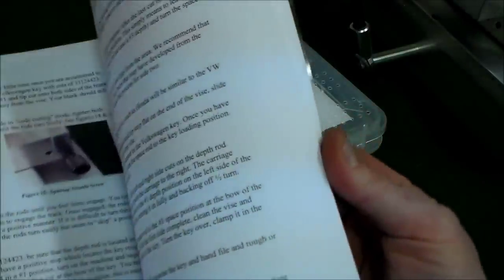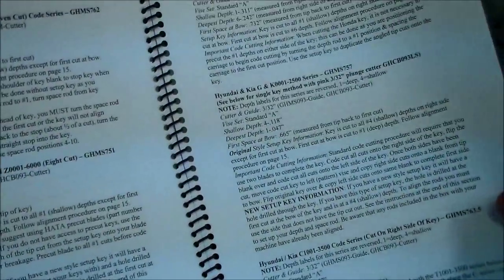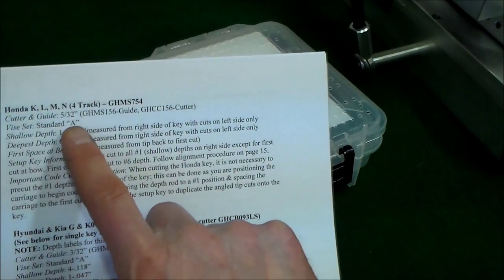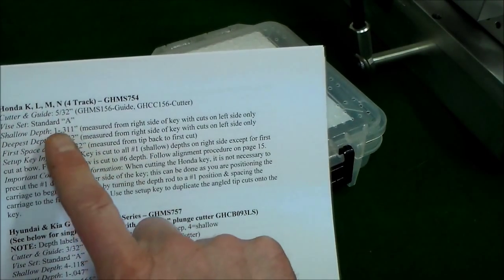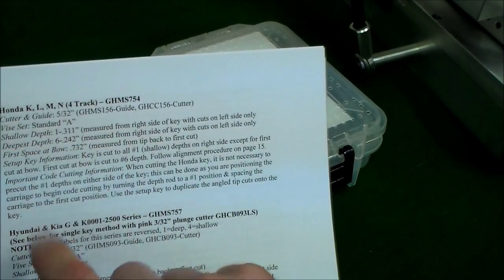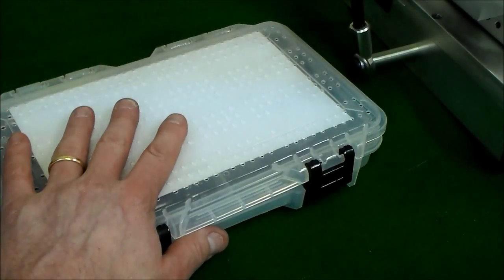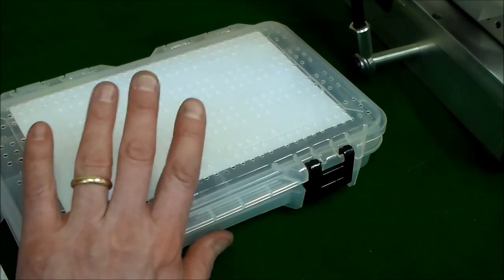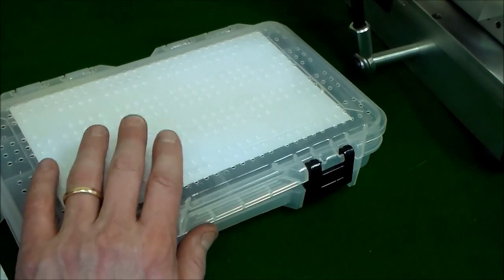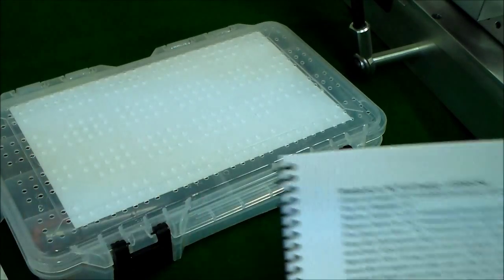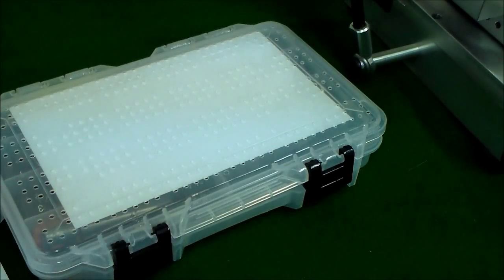That information can also be found in the back of the manual. And so again, here's our Honda information. Tells us which guide and which cutter to use. Standard set of vices A. Five thirty-seconds tells us what the shallowest depth on the key is. Deepest depth. Some other depth and space information. You can use this information, it's also in generic code, but to check to make sure that your keys are being cut accurately. The biggest thing to remember is that all of the rods that come in this kit with the machine are all preset to your machine. Keys have been cut on them. We know that they work. So every set of rods that comes in this kit has been calibrated for your machine. So do not adjust anything inside the plastic box. If the kit has come separately from the machine, then it probably needs to be adjusted. But if it is in that kit, then it is all taken care of already. Do not adjust it.